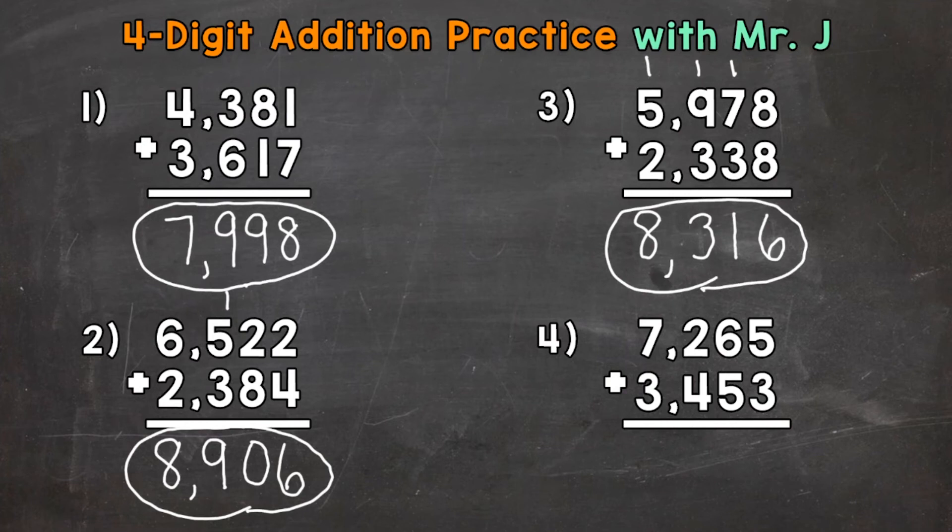Lastly, number 4, we have 7,265 plus 3,453. Start with the ones. 5 plus 3 gives us 8. Now for the tens place. 6 plus 5 is 11. Regroup the 1. Now we go to the hundreds. So 1 plus 2 plus 4. 1 plus 2 is 3. Plus 4 is 7. Now for the thousands. We have 7 plus 3. That gives us 10. So put the 0 from 10 in the thousands. And regroup the 1 in the 10 thousands place.